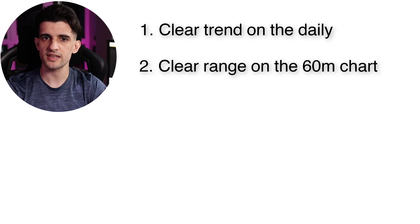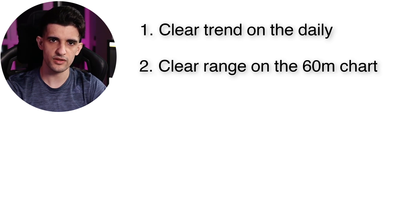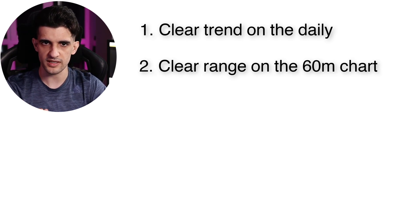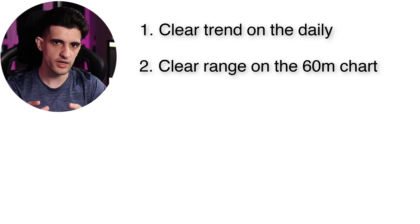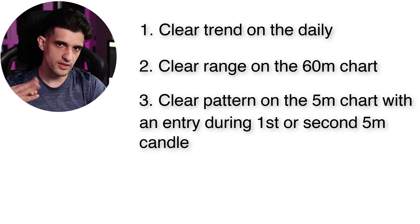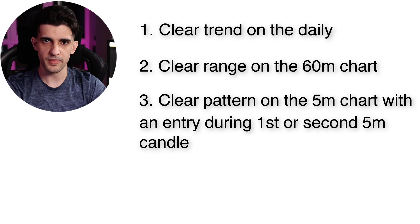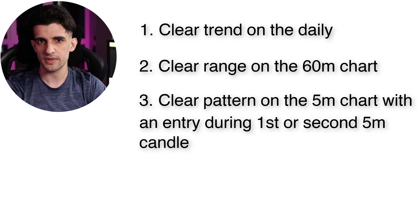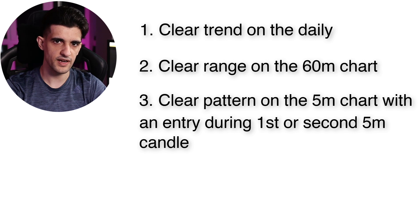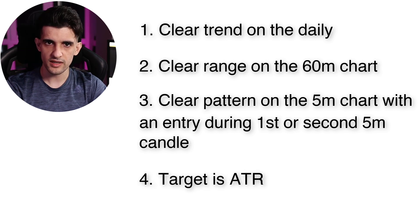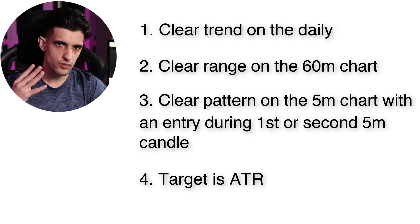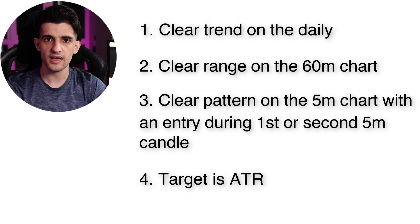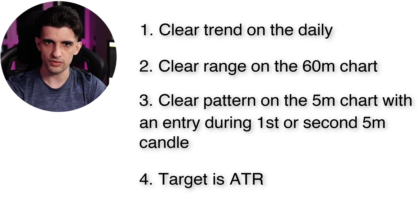The second thing you want to find is a clear range on the 60-minute chart that you could play the break of, so that you can get some momentum — and make sure that you're entering at the beginning of the 60-minute range. The third thing you want to see is a clear pattern on the 5-minute chart, or make sure that the breakout happens during the first or the second 5-minute candle. Once you get your entry, you hold on to your target based on the average true range.